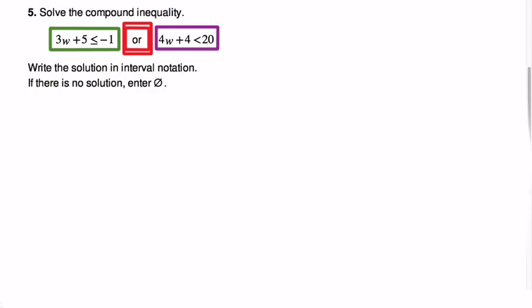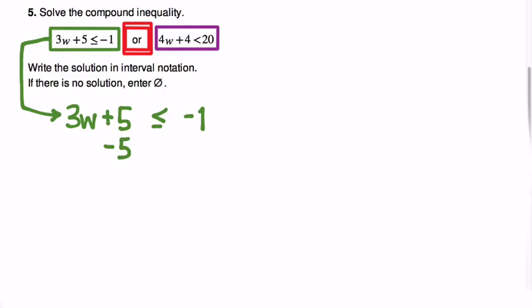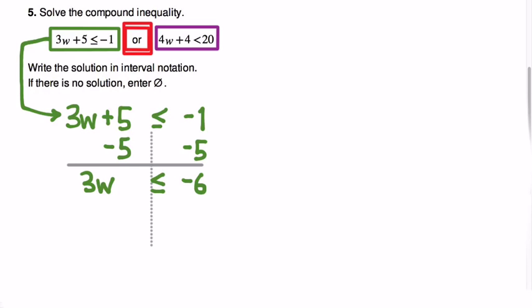Let's take them one step at a time, focusing first on 3w plus 5 is less than or equal to negative 1. Brian's strategy was to subtract 5 from both sides to cancel it out. We're treating it as though it were an equation, which is what we want to do. Using the same reverse order of operations — SADMEP — subtracting 5 from both sides leaves 3w less than or equal to negative 6.